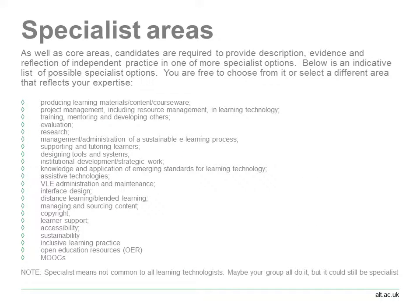Once you've covered all four core areas, you can focus on a specialist area. You can choose at least one, but you can include more than one. We've included an indicative list of possible specialist options; however, you are free to choose a different one that reflects your expertise. A specialist area is something not common to all individuals who work with learning technology. Examples include open educational resources, learner support, accessibility, copyright, evaluation, project management, or designing tools and systems. This is a real opportunity to be creative and allow your portfolio to reflect your professional practice.